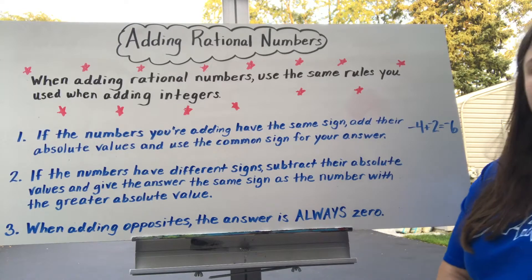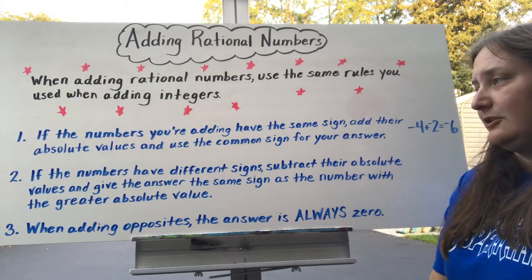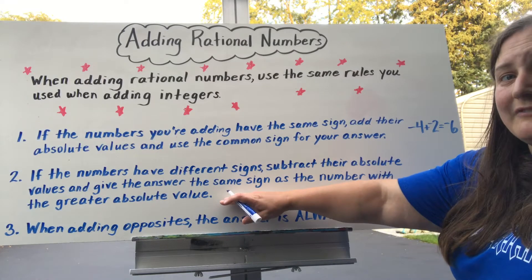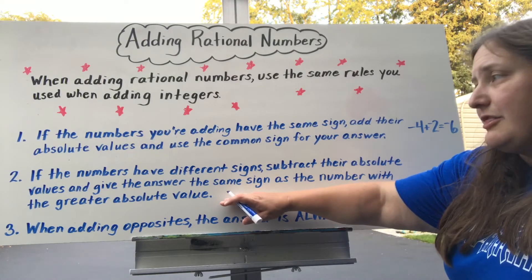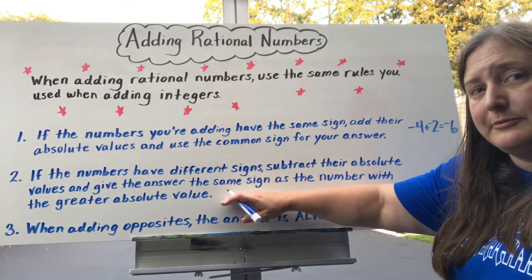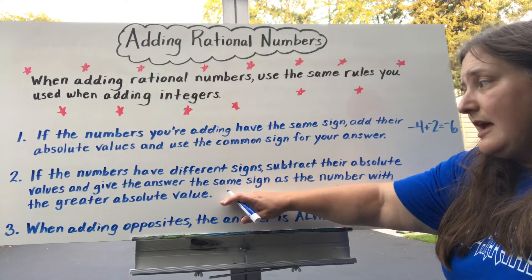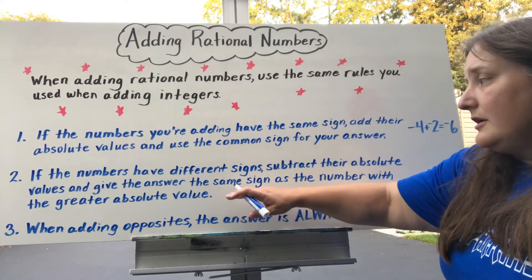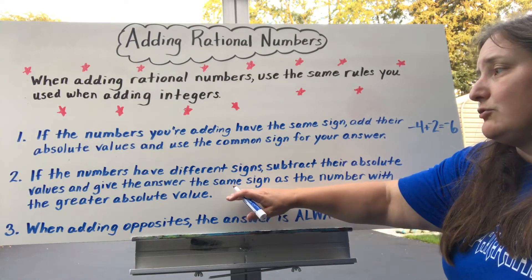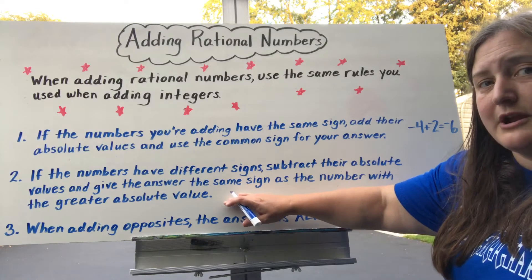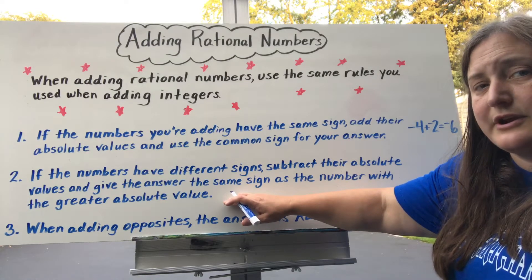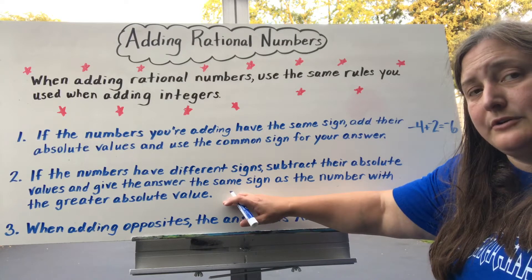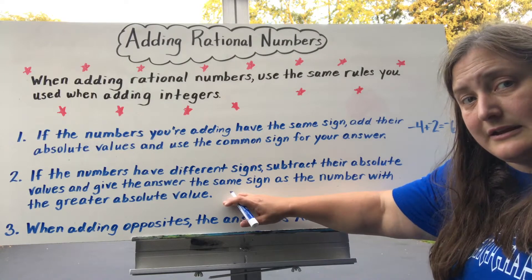The second rule when adding integers is that if the numbers you're adding have different signs, then you're actually going to subtract their absolute values, and your answer is going to have the same sign as whichever number had the greater absolute value. So if the greater absolute value number was positive, your answer is positive. If the greater absolute value number was negative, your answer is negative.